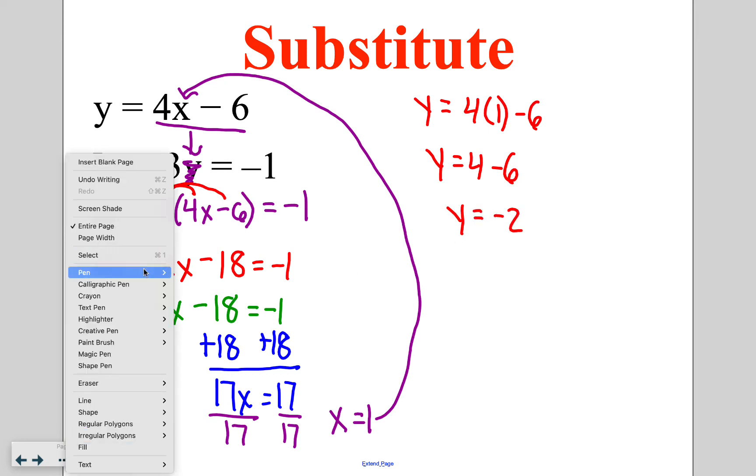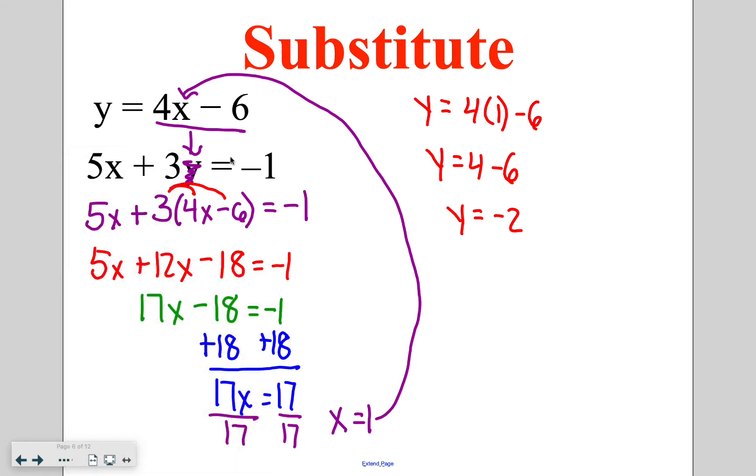So my final answer, the place where these two lines would intersect on the graph, occurs at 1, negative 2. So if you put them on the graph, this would be their point of intersection. Substitution is a way that we can solve that algebraically.